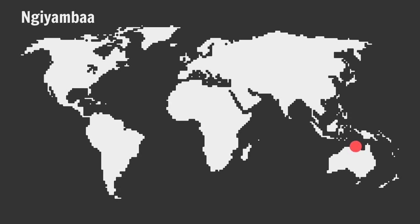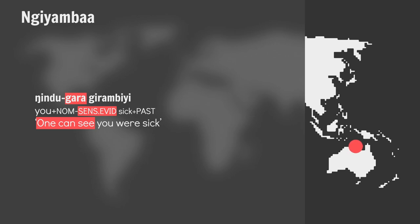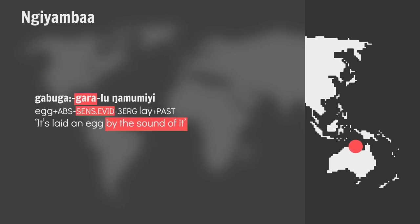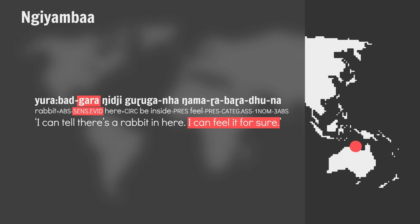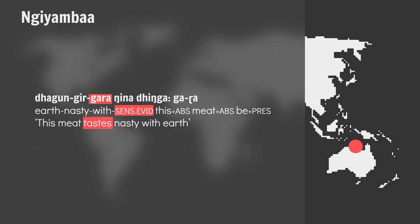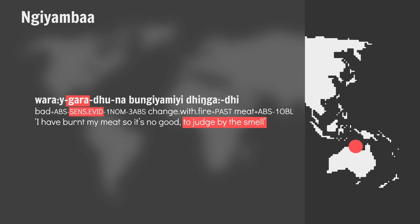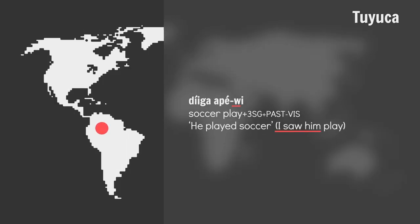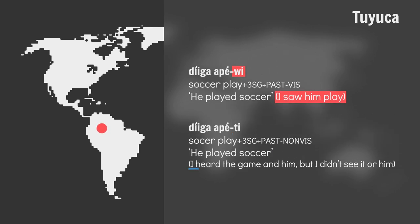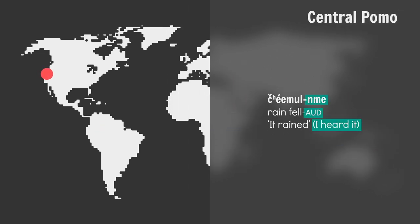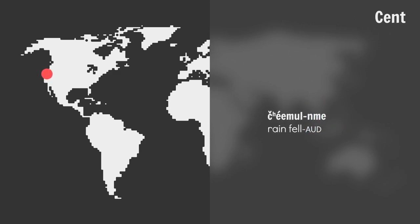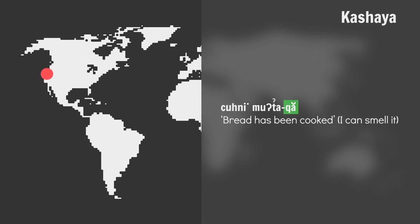On the sensory side, Ngiyamba has a marker for sensory evidence used for all five senses — a general sensory feature. Whereas Tuyuka has one marker for sight and another for all the other senses, featuring visual modality and non-visual modality. Furthermore, Central Pomo has a dedicated auditory marker. No language has specific markers for senses other than seeing and hearing, but Kashia has a catch-all marker that can be used to signal non-visual, non-auditory evidence.